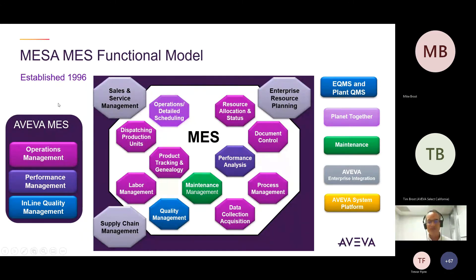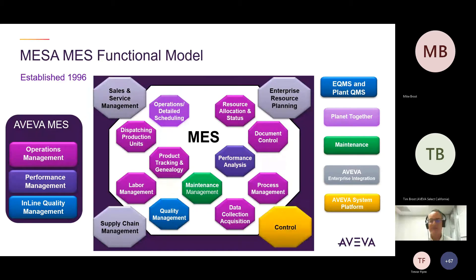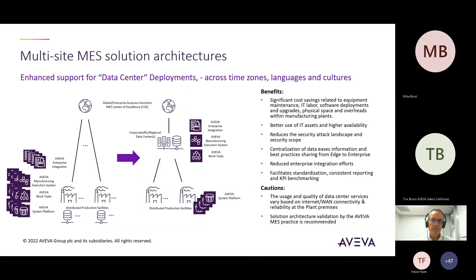I won't go back since I am short on time. This is again the MES functional model — the different functionalities. Operations management, performance management, and quality management are the functionalities we provide within our MES offering. This can sit on top of a system platform for connectivity to I/O and any additional control mechanism. And we have enterprise integrator for integrating to external systems like ERP. What are we trying to do with this next release, or the longer-term look of what we're doing in MES?